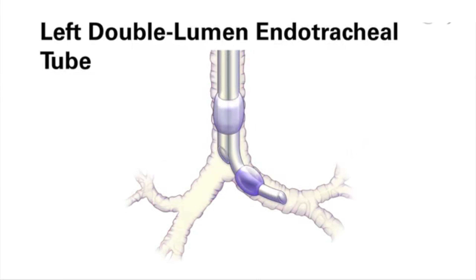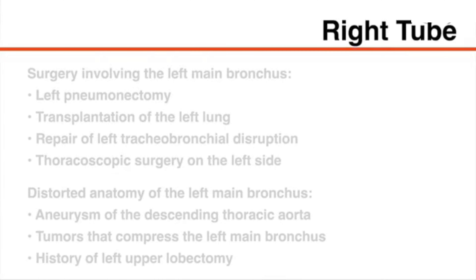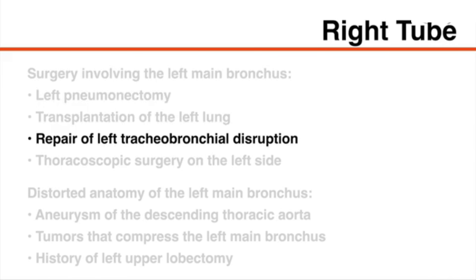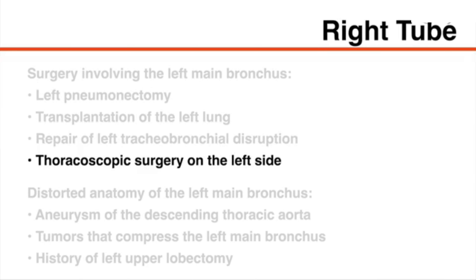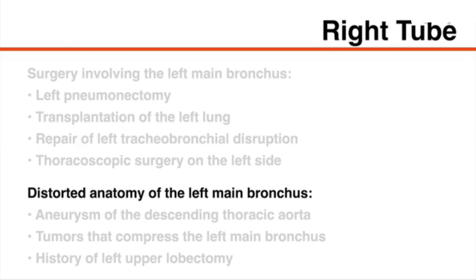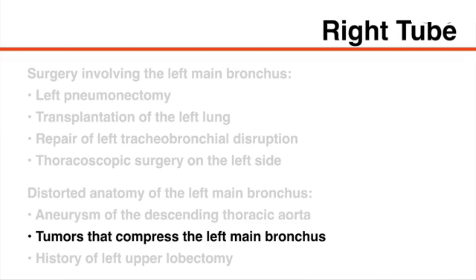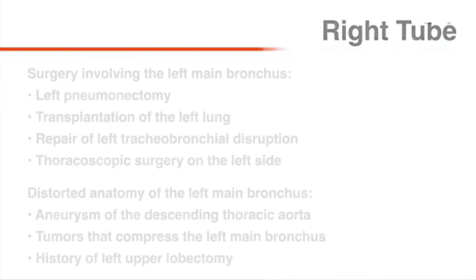In most thoracic procedures, the airway can be managed successfully with placement of a left-sided tube. Right-sided tubes are used in patients undergoing surgery involving the left main bronchus, such as left pneumonectomy, transplantation of the left lung, repair of left tracheobronchial disruption, thoracoscopic surgery on the left side, and in patients with distorted anatomy of the left main bronchus, which may be caused by aneurysm of the descending thoracic aorta, tumors that compress the left main bronchus, and history of left upper lobectomy.